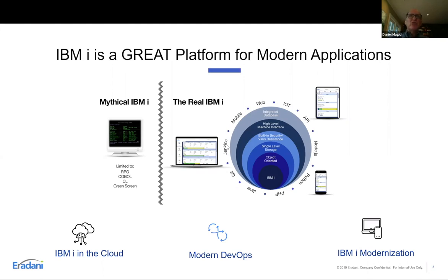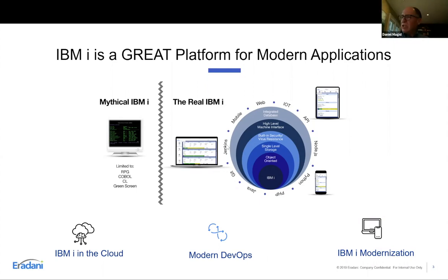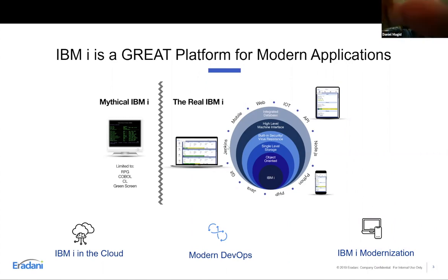You can take advantage of what the IBMi does already and extend it with open source. There's no reason to rewrite applications that have been developed over decades that still do a really good job running the core functions of your business. What you want to do is extend those applications to expose their functions via the latest technologies using open source. When looking at your application, ask: what are the things I'm trying to do? Sometimes RPG is the right answer, sometimes JavaScript, sometimes PHP or Python.